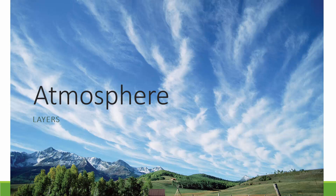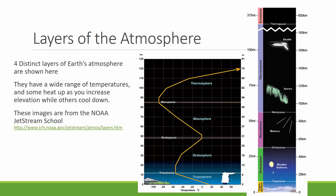Although we typically only see the lower part of the atmosphere, there are actually four distinct layers of Earth's atmosphere. In this image from NOAA, we can see the four different layers.